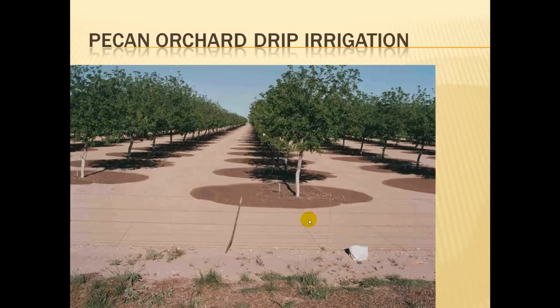This is drip irrigation in a pecan orchard. Notice how with drip irrigation you see the ring of saturated soil around the trees, but the water isn't exposed to evaporation — very little is being lost. However, this system can be quite expensive to put in. And if you're dealing with a crop you might want to plow under, such as corn, chilies, or soybeans, you won't be able to do that. You'll have to combine drip irrigation with no-till agriculture.